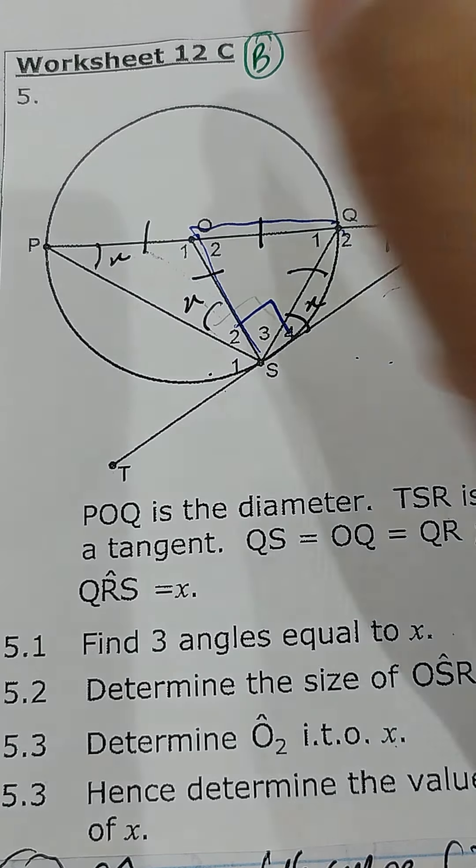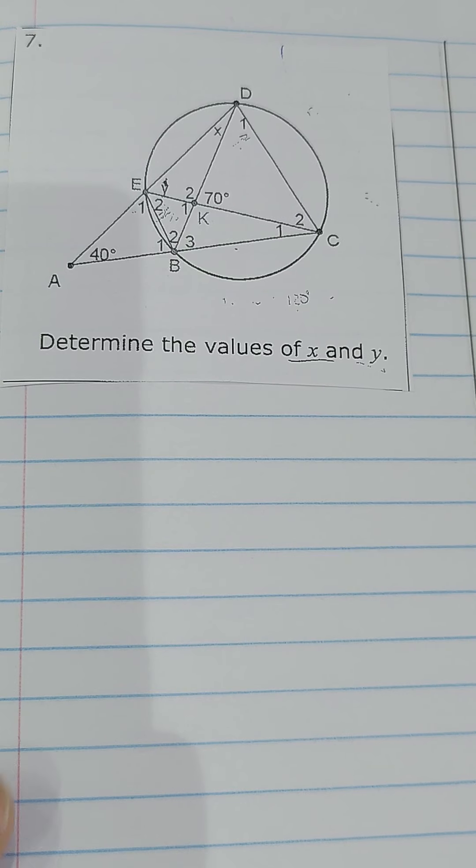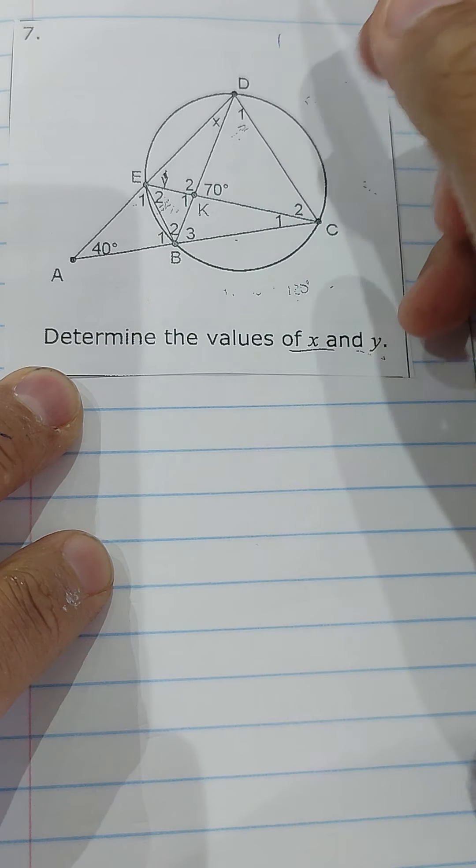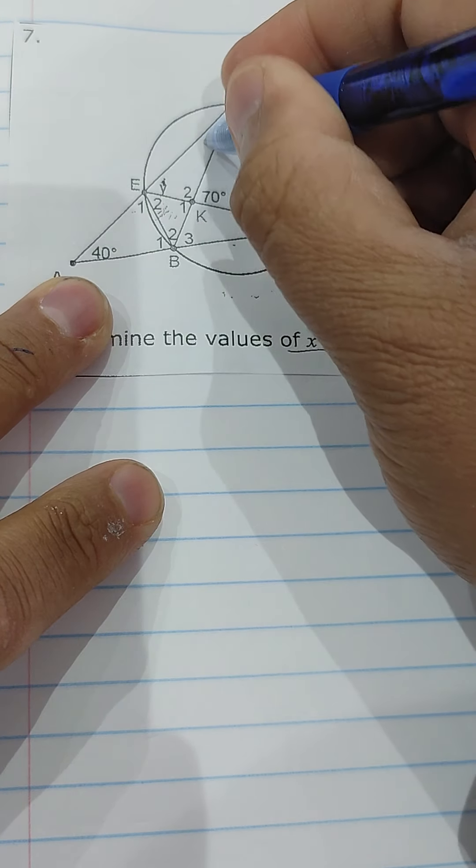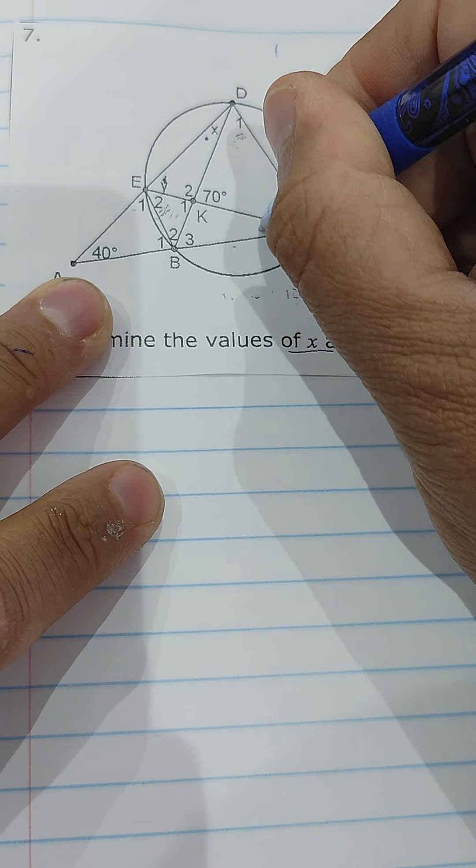In question 7, there's no introduction, really. The question says determine the value of x and y. We look at where x is lying. X is here, so that angle and this angle are the same, angles in the same segment.